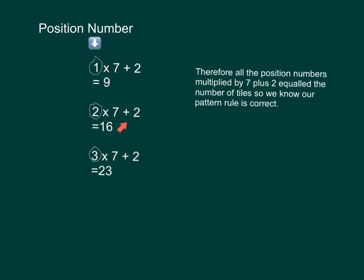Therefore, all the position numbers multiplied by 7 plus 2 equals the number of tiles. So we know our pattern rule is correct. Thank you.